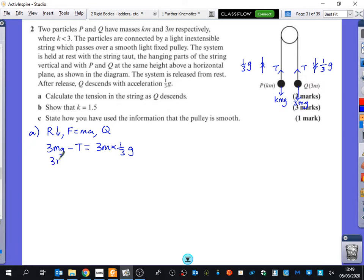So I get 3MG minus T equals, 3M times a third is just MG. So rearranging this, you get that T is equal to 2MG.